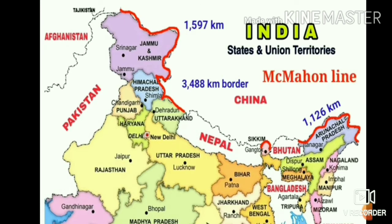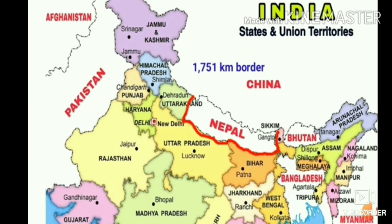As you can see, Jammu & Kashmir, Himachal Pradesh, Uttarakhand, Sikkim, and Arunachal Pradesh form the McMahon Line — that is the border between India and China. It is called the McMahon Line.